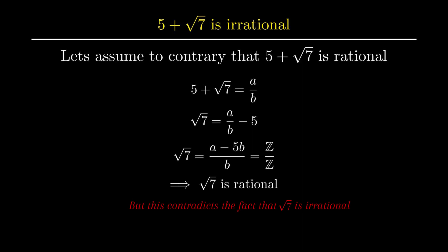Since a, b, and 5 are integers, and the difference of integers is always an integer, root of 7 would be rational as it equals integer over integer. But this contradicts the fact that root of 7 is irrational, as it is non-terminating and non-repeating. This contradiction has arisen because of our incorrect assumption. Hence we conclude 5 plus root of 7 is an irrational number.